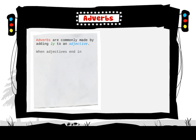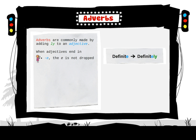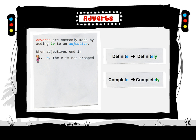When adjectives end in -e, the e is not dropped. For example: definite → definitely, complete → completely.